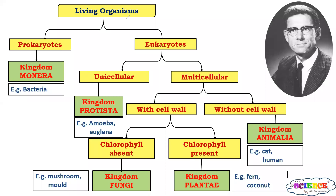All living organisms were classified into five kingdoms by Robert Whittaker. The five kingdoms are: first, Kingdom Monera, which includes all prokaryotic organisms such as bacteria. Second kingdom is Kingdom Protista, which includes all eukaryotic and unicellular organisms such as amoeba and euglena.